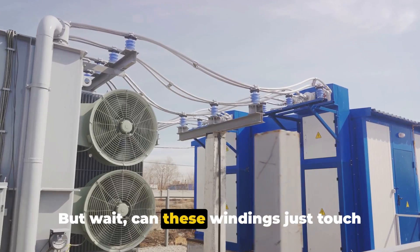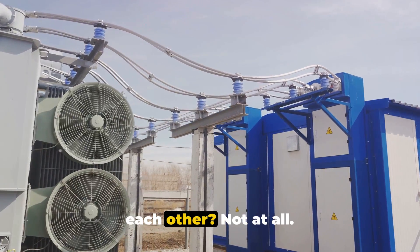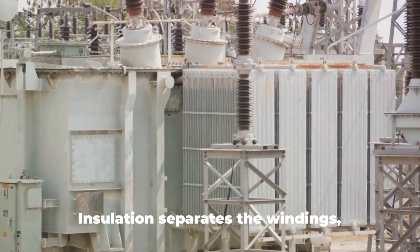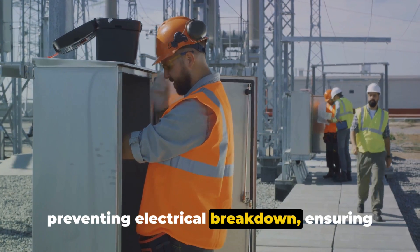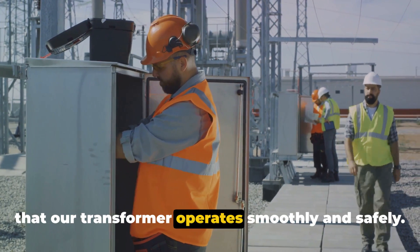But wait, can these windings just touch each other? Not at all. That's where insulation comes in. Insulation separates the windings, preventing electrical breakdown, ensuring that our transformer operates smoothly and safely.